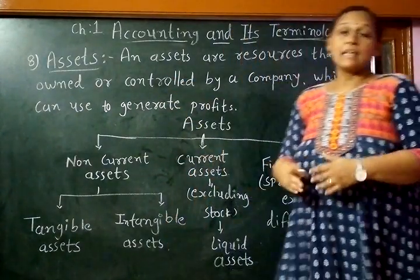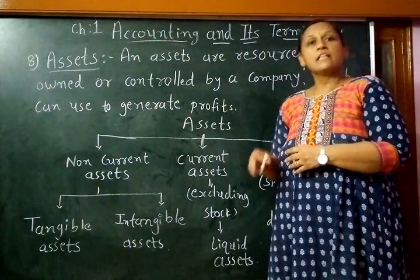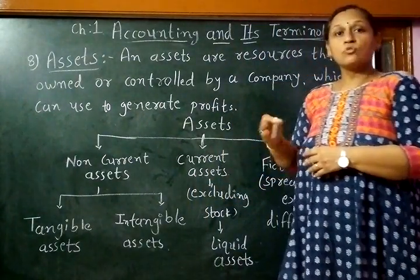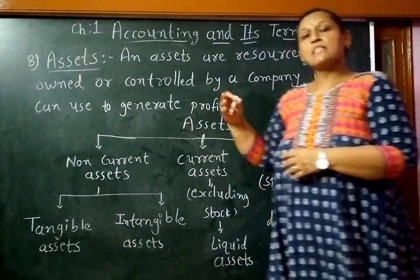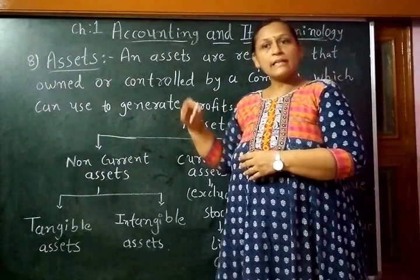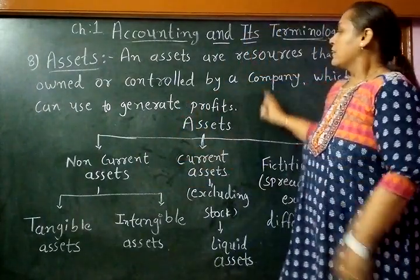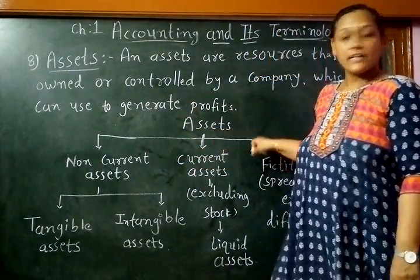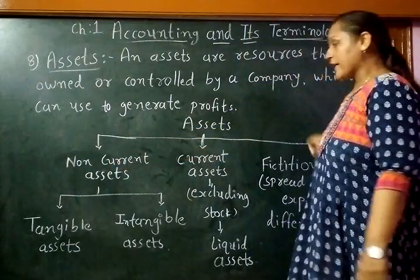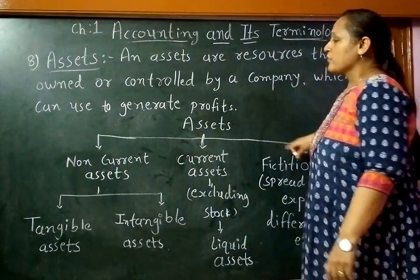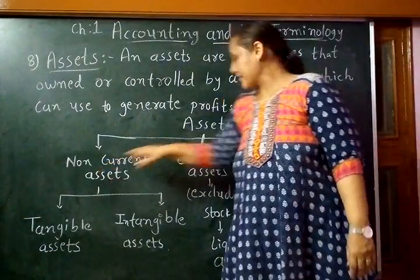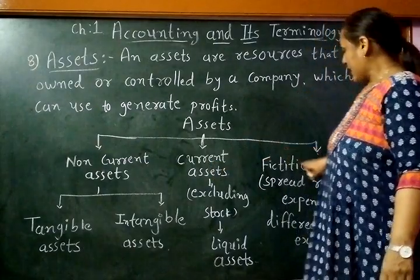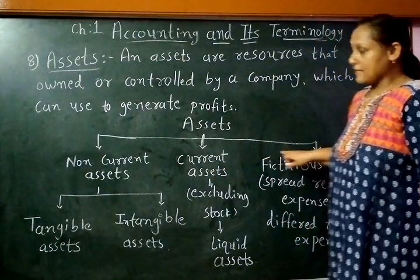Assets are something that is useful in a business to run it smoothly and nicely. Assets are divided into different categories: non-current asset, current asset, and fictitious asset.